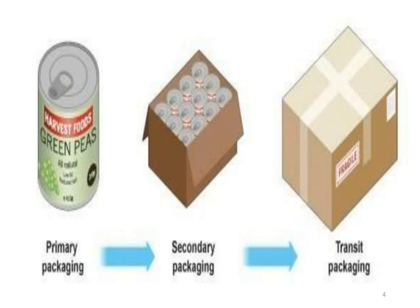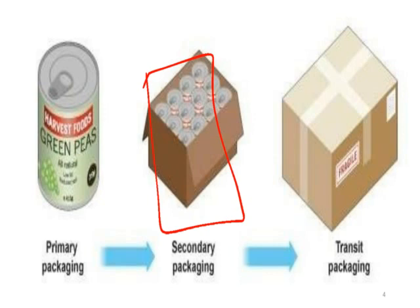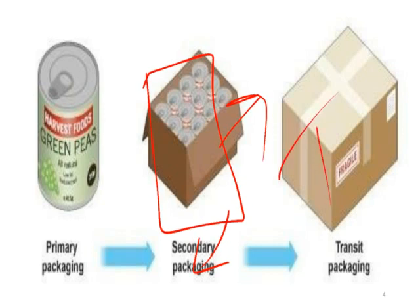For example, with a paracetamol tablet: the strip is the primary packaging. When you go to a medical shop and ask for a strip of paracetamol or Crocin, the pharmacist takes it from a larger packet that may contain around 10 to 12 strips — that packet is the secondary packaging. When they do transportation, the packets are kept in a carton or box so transfer is easy and safe — that carton is the tertiary packaging, also called the transit package.